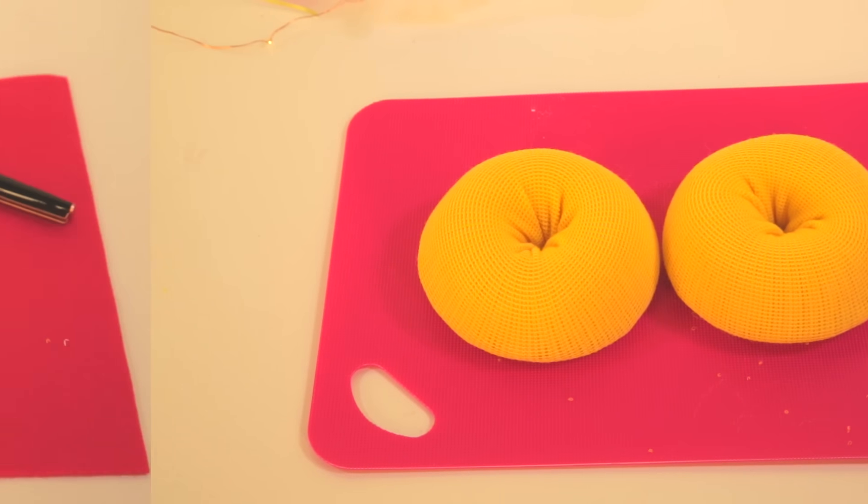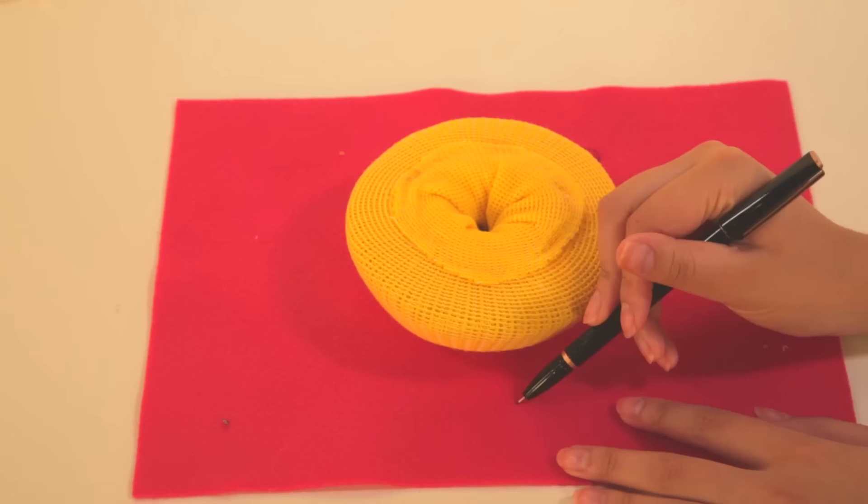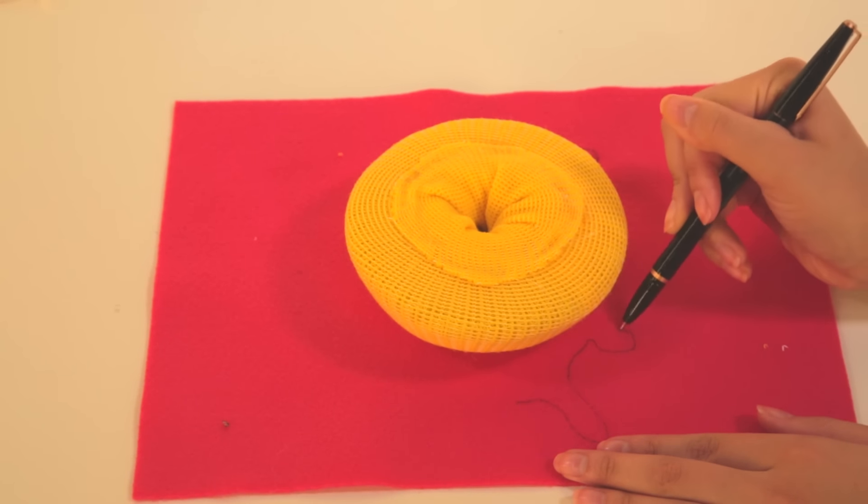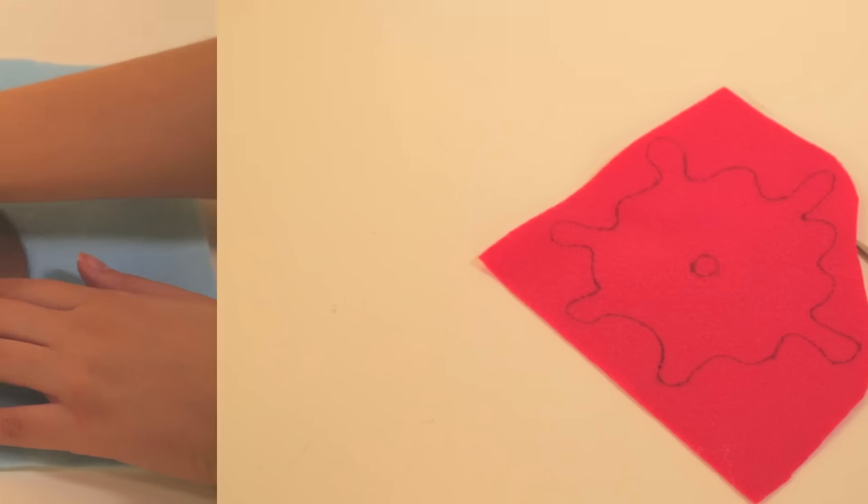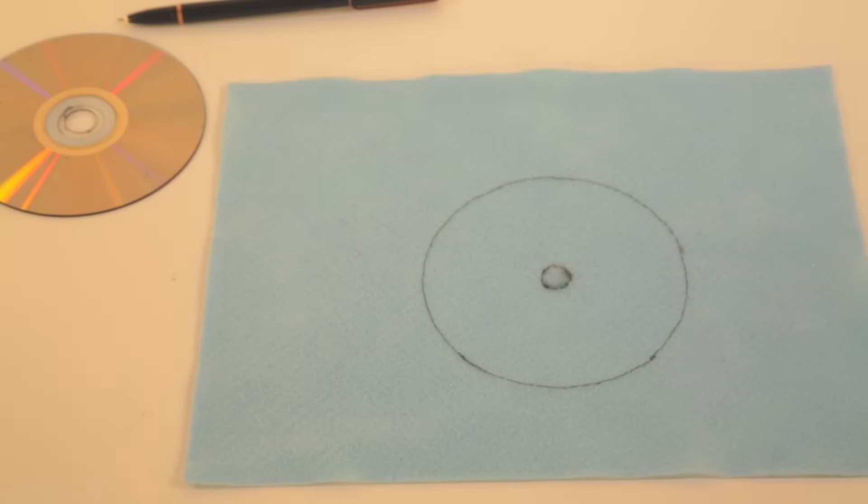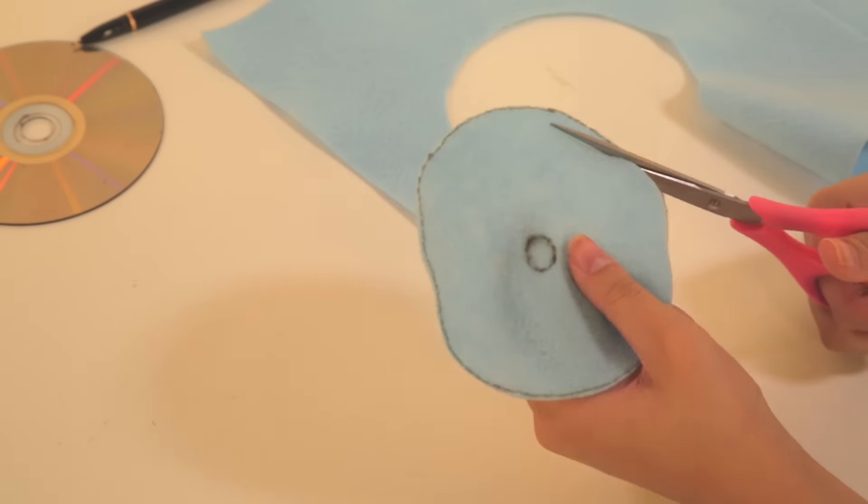Now it's time to make the icing. Place one donut half on your colored felt. Trace out a shape for the icing like this. Cut out the icing and hot glue it to one of your donuts.